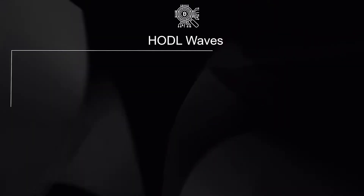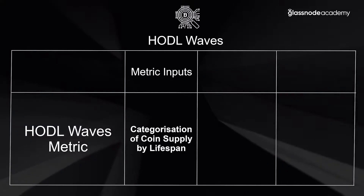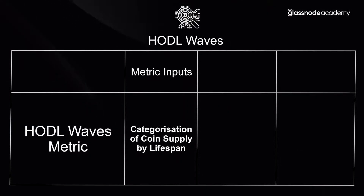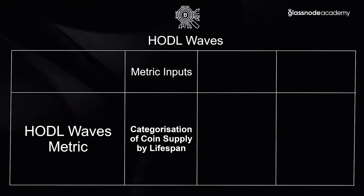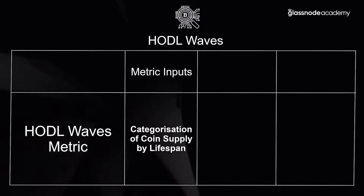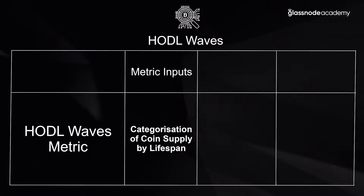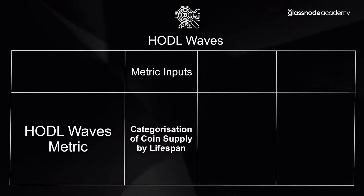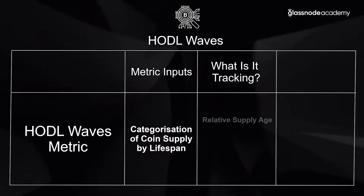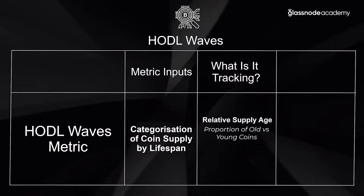The HODL waves take the entire supply of coins and categorize it by lifespan. We develop a series of age bands — for example, one year to two year, two year to three year, and on the lower side we have down to the hourly, one day to one week, one week to one month. We categorize out the entire supply depending on when each UTXO was created. What this provides is a relative view on the age of the supply — we can see the proportion of old coins versus young coins.